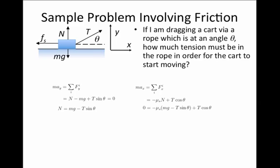We know everything in this expression except for the tension T. Shuffling terms around, we find that T equals μ_s mg divided by cosine theta plus μ_s sine theta.